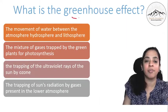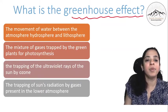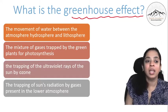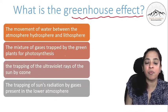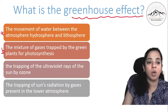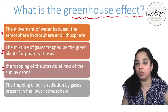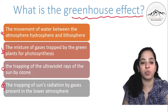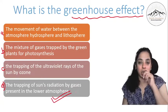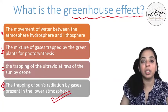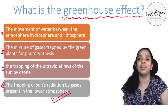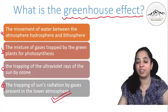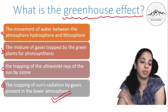Now what is greenhouse effect? The movement of water between atmosphere, hydrosphere and lithosphere. That we read was water cycle. Then the mixture of gases trapped by the green plants for photosynthesis. Is it A or B or is it C? The trapping of ultraviolet rays of the sun by ozone. Or is it the trapping of sun's radiation by gases present in the lower atmosphere? So yes, this is greenhouse effect. If you want to study the chapter, if you have not understood the chapter, you can write in the comment section. I will make a video of the explanation of the chapter as well wherein I will explain you everything in detail. Greenhouse effect, how the ozone absorbs and everything.